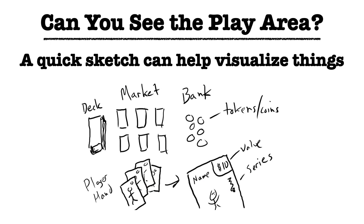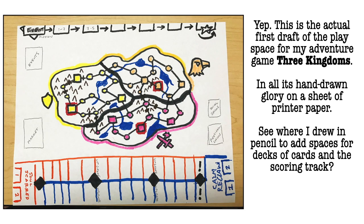Each game visualization is going to be different based on your game's needs. These can be super simple. This is the draft of the game board and game space for my Adventure Game 3 Kingdoms — I drew what would be the map in the middle with markers, and a separate board as a scoring track. Later I realized I didn't have space for some decks, so I just drew in pencil areas to indicate we need decks of cards on this board. While this is a single sheet of 8.5 by 11 paper, it represents a game board, a separate scoring track, and reserved spaces for card decks.